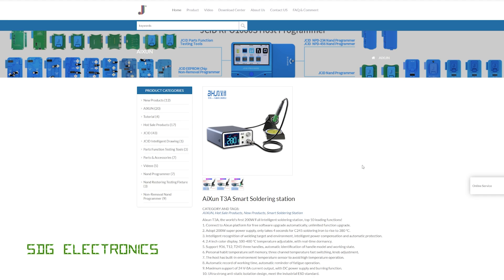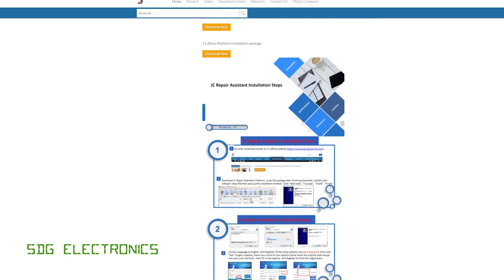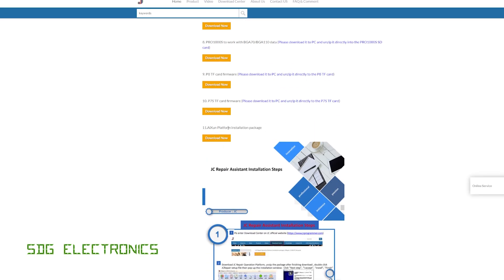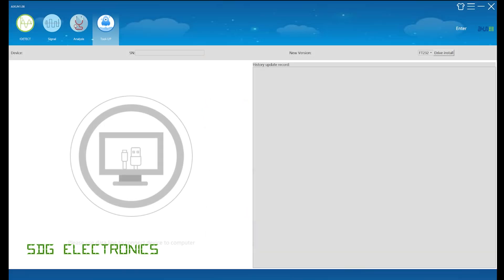If you go to the manufacturer's website, jcprogrammer.com and go to download center, at the bottom here is the Exxon platform installation package. So that's what we need to download and install. Once it's installed, you can start the software and go to the tool up section here with that little rocket symbol. You may need to change the language in the software from the setting tab, and then install the FT232 driver by clicking drive install.